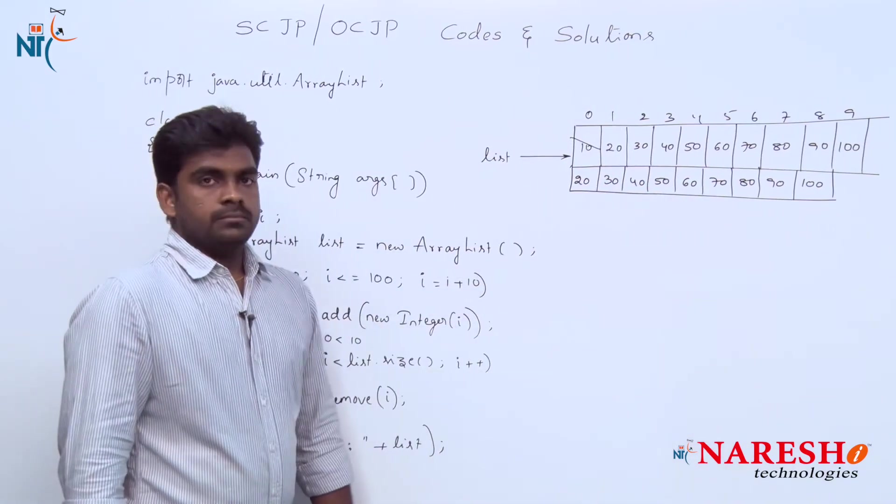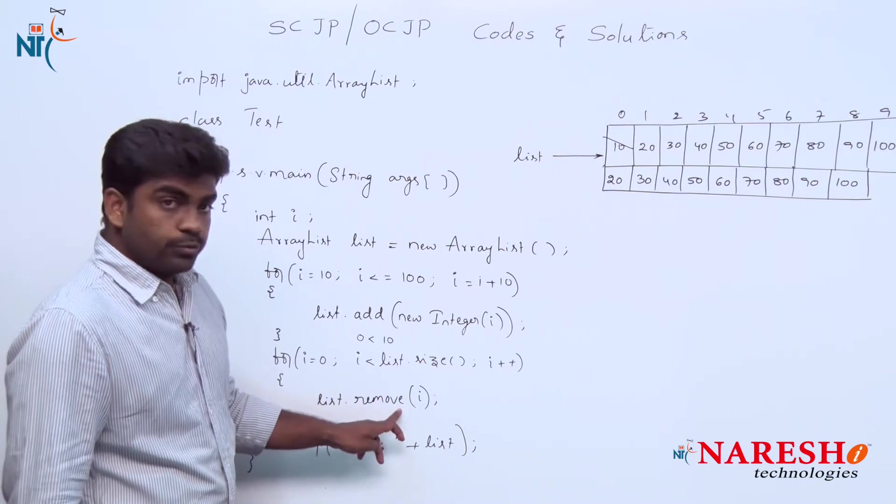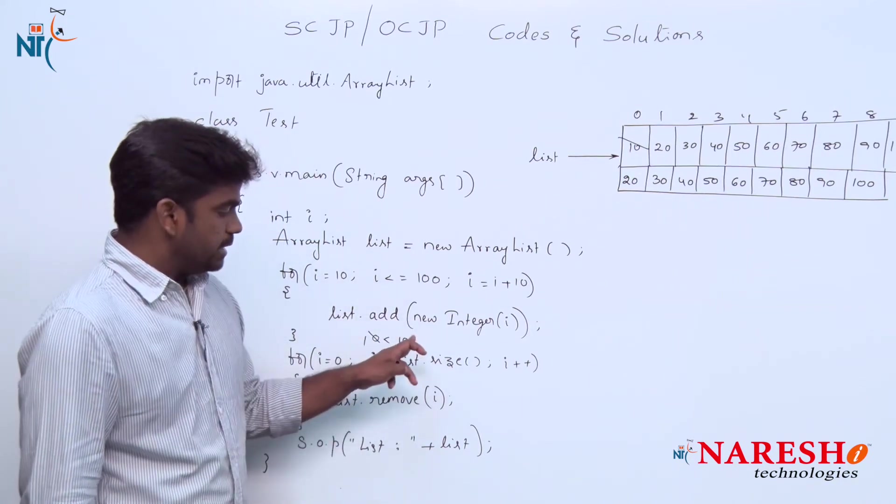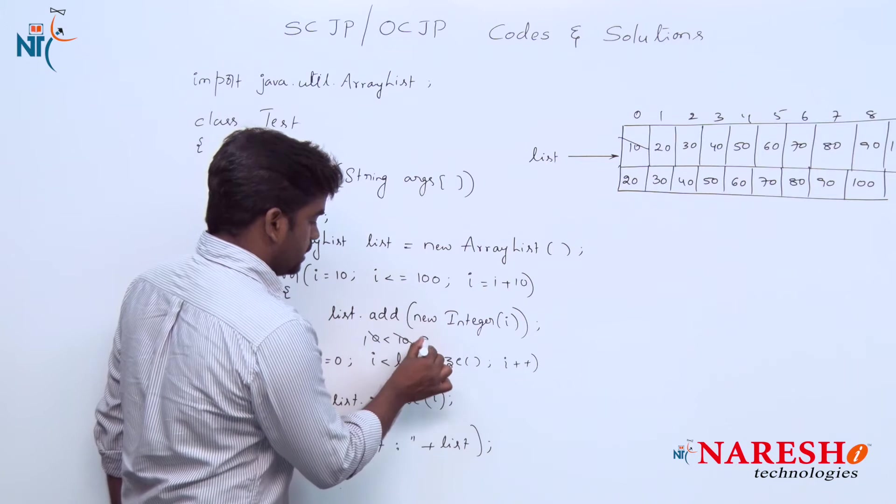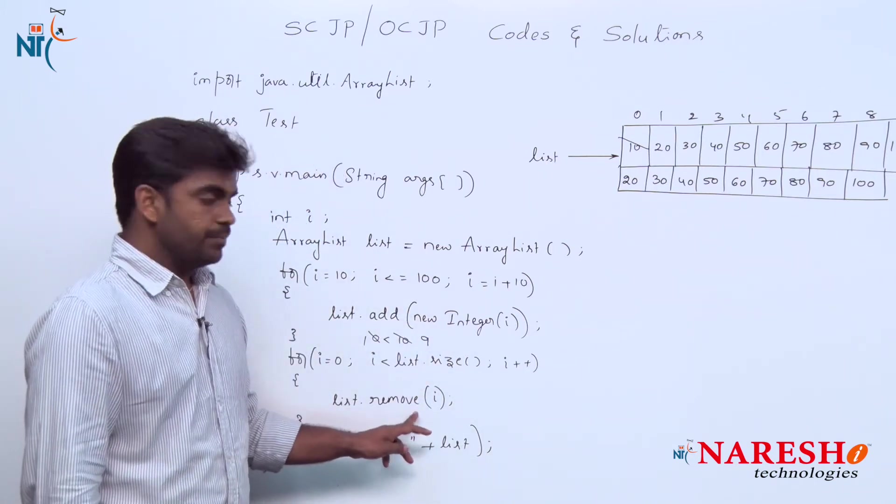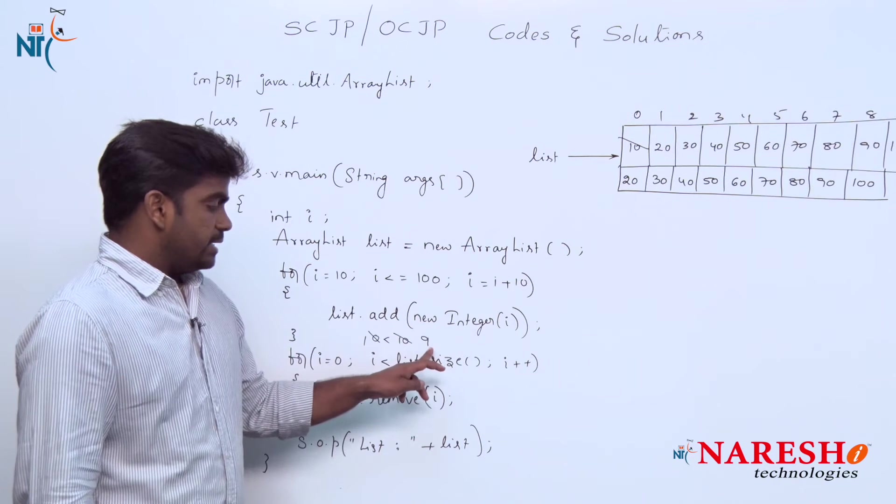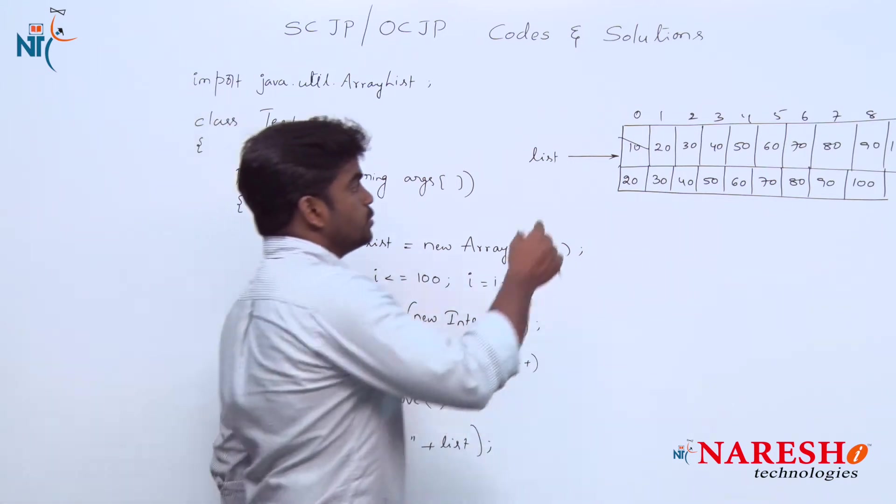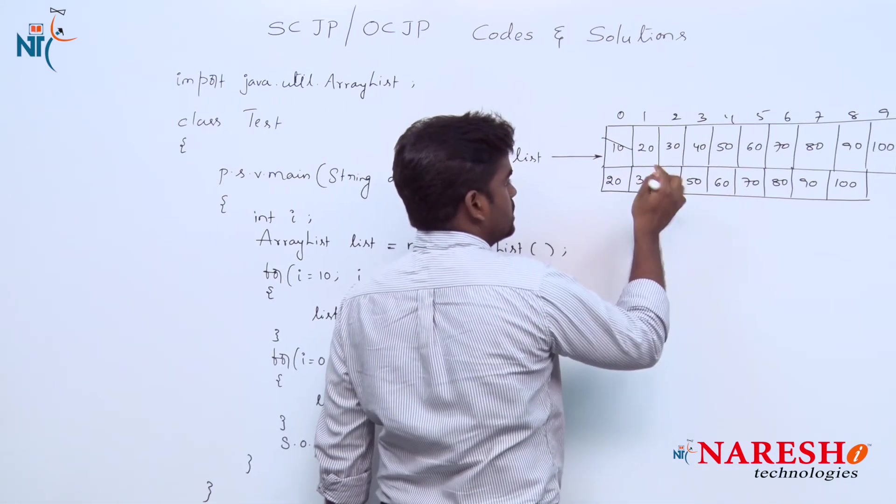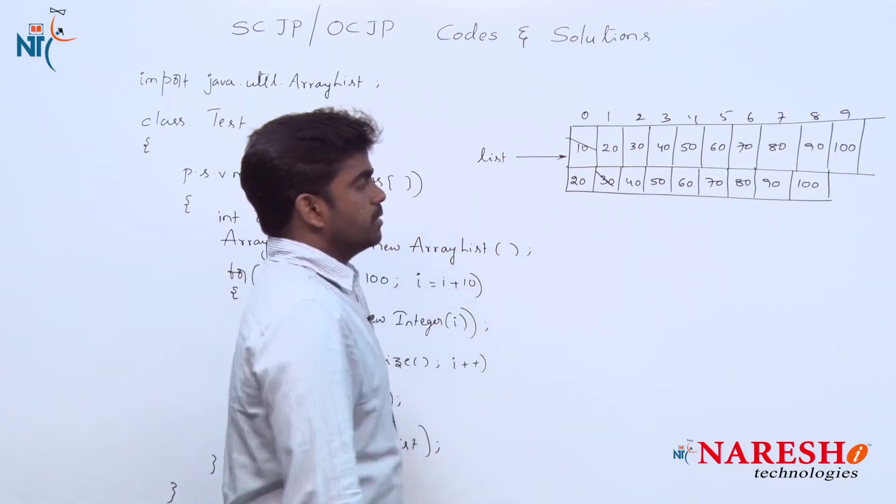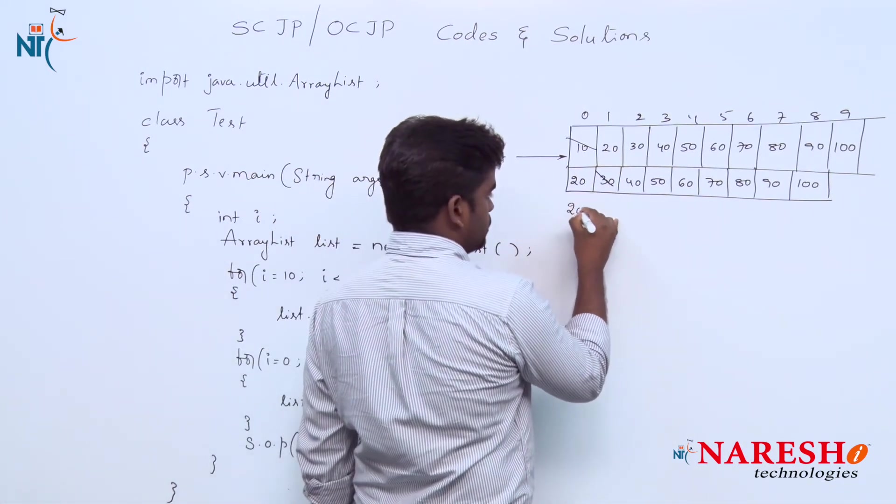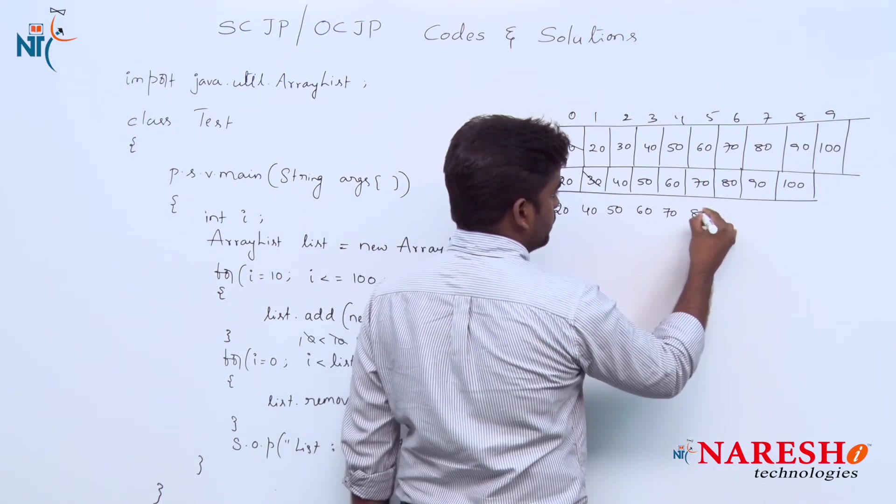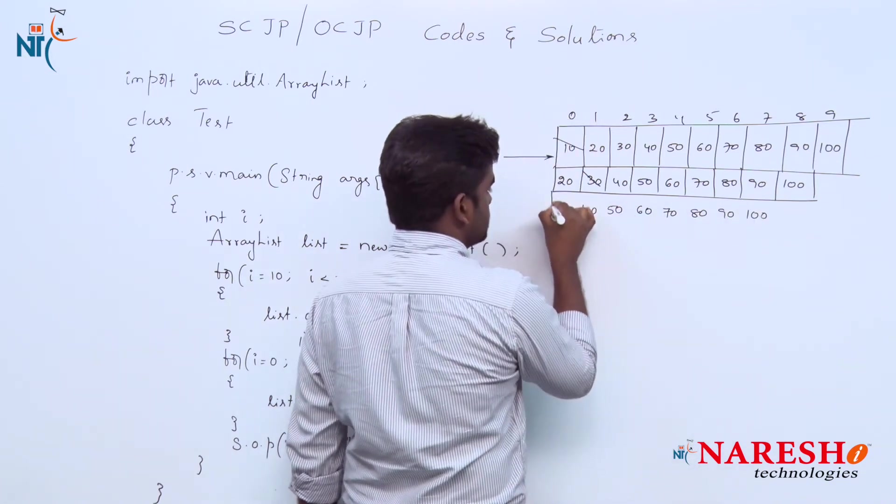After removing, it will increase the i value. i value becomes 1, and size is also decreased already. The size is not 10, it is 9, because one element is already deleted. 1 is less than 9, condition is true, come inside. list.remove(i), i is 1. Whatever element is in the first position, first position is 30, will be removed. 20 is as usual, so 40 will shift. 40, 50, 60, 70, 80, 90, 100, and the size becomes 8.